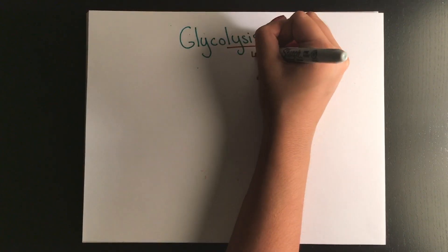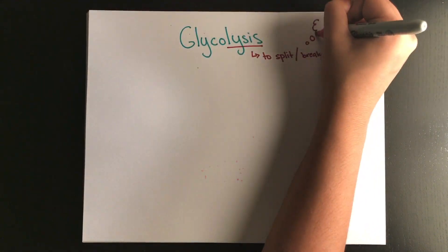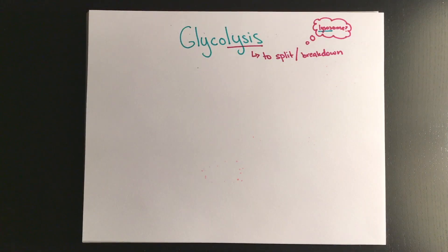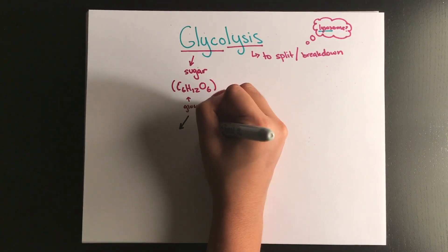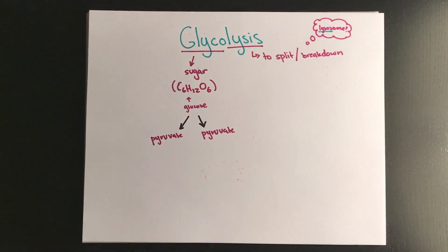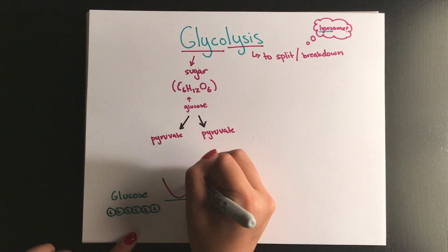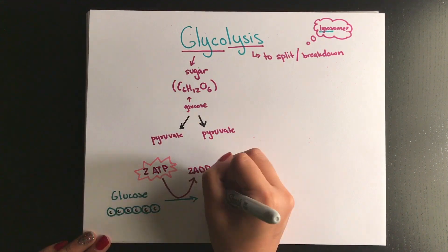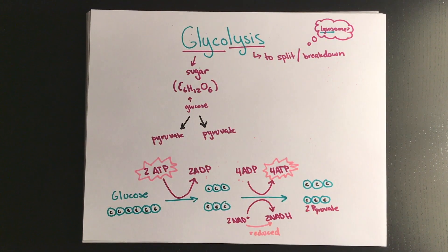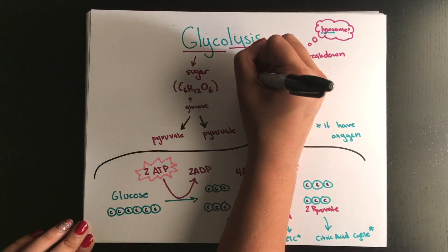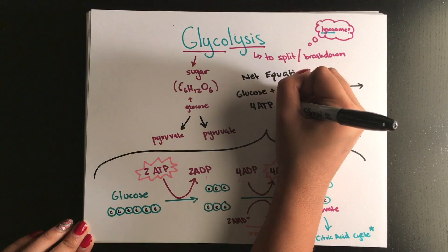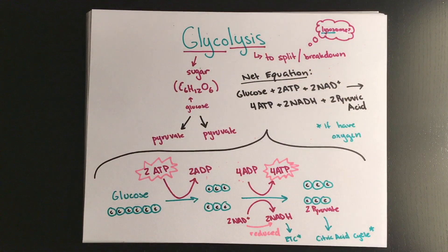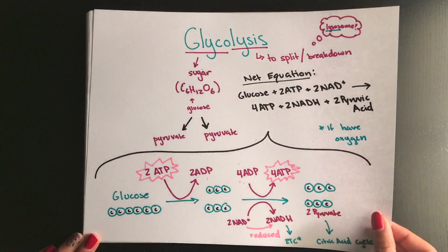Cellular respiration begins with glycolysis which by the stems means the breakdown or lysis of sugar or glucose. So in this case it's breaking down into two molecules of pyruvate. Note that it does take some energy to break down the sugar so we also need two ATP to get this whole thing started and in the end we'll end up with a net of two ATP, two pyruvate molecules, and two NADH. This is the only step of cellular respiration that's anaerobic or doesn't require oxygen and this occurs within the cytoplasm.